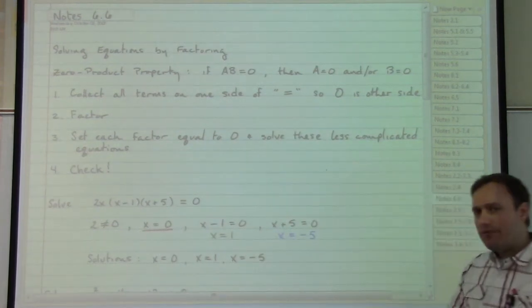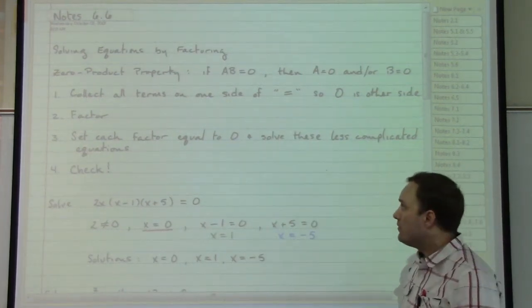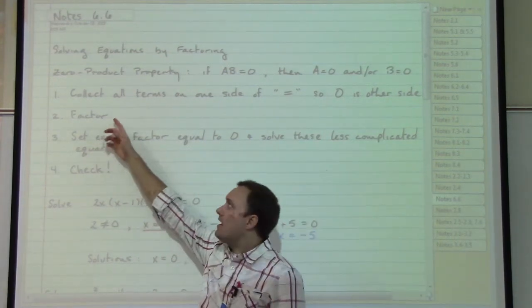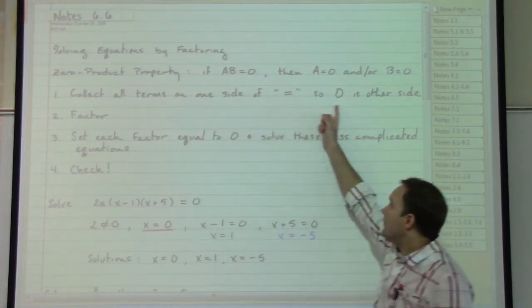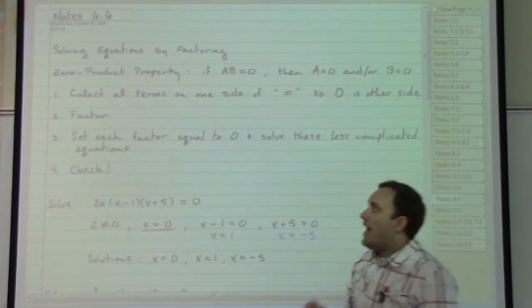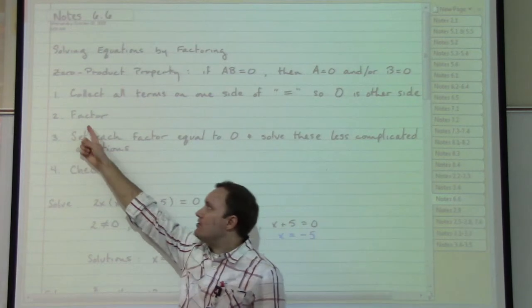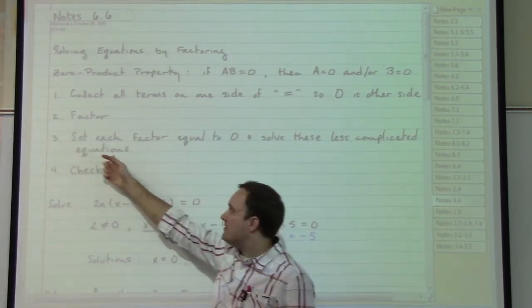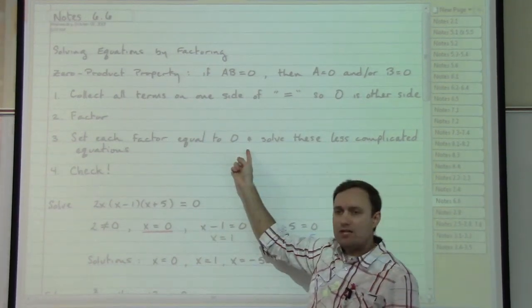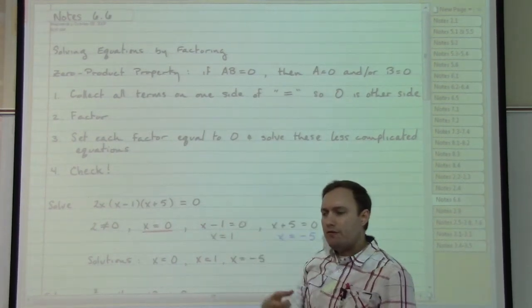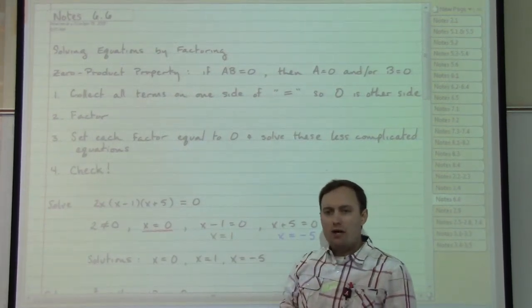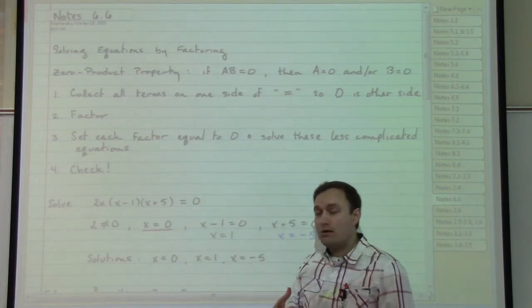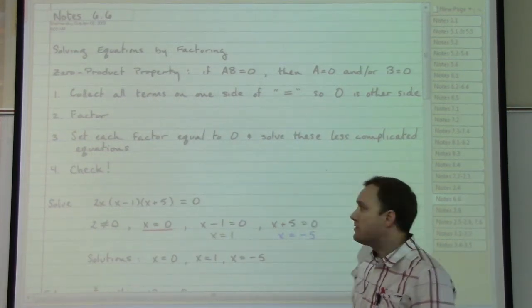That gives us a very special situation that we can use in order to solve equations, provided that we can get all of our terms on one side so that we have equal zero, and that the resulting expression can be factored. If that's the case, then that means that we can take each factor and set it equal to zero so that we have created a collection of smaller equations to solve, smaller and arguably simpler equations to solve.